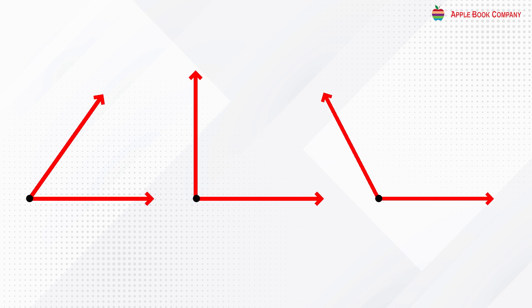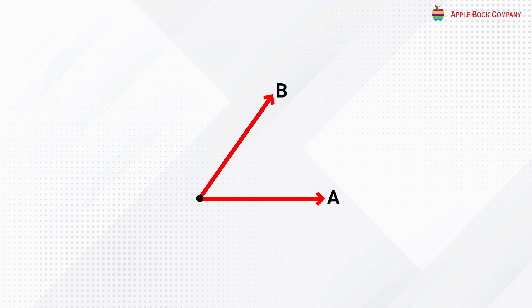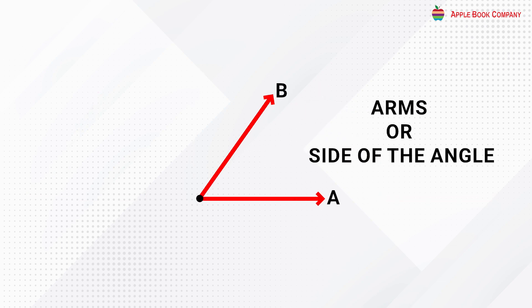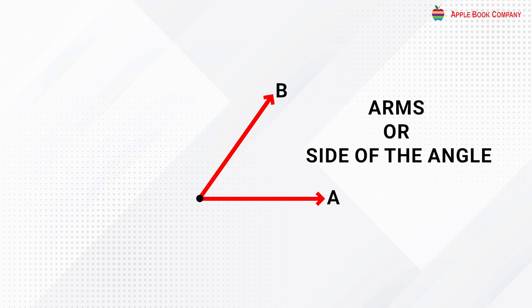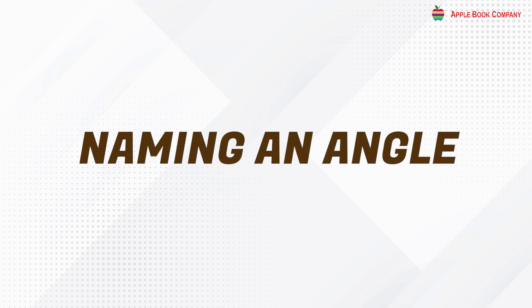An angle is a figure formed by two rays meeting at a common end point. The two rays are called the arms or sides of the angle. The common end point is called the vertex of the angle.